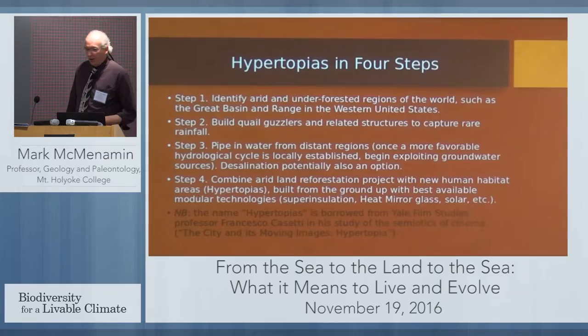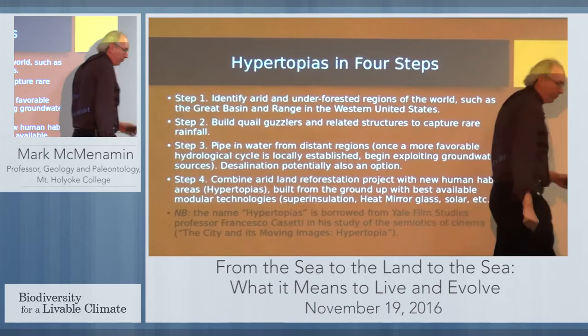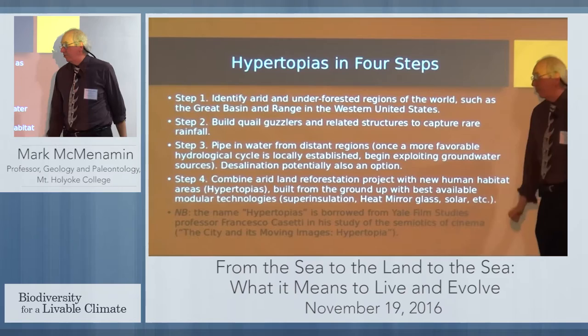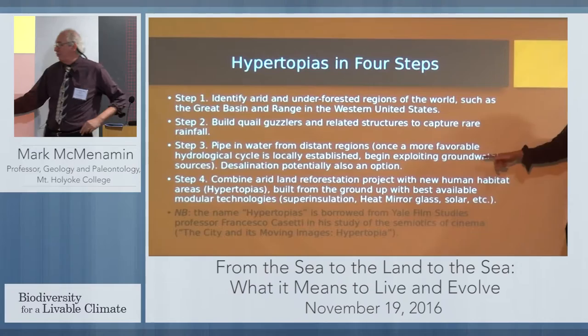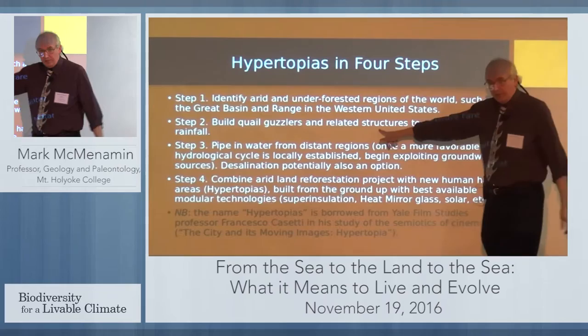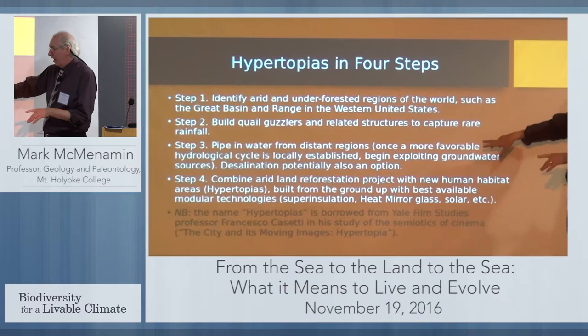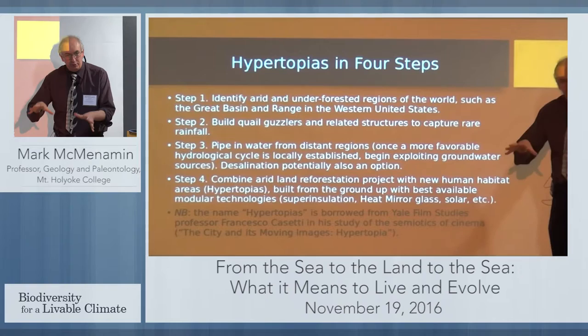Hence the Hypertopia Proposal. Here are the four steps for hypertopias. Step one: identify arid and underforested regions of the world, such as the Great Basin and Range in the western United States, extending into Mexico. Step two: build quail guzzlers and related structures to capture the rare rainfall in the area — I helped build these in the 1970s out in the Mojave Desert, so I know they work. Step three: pipe in water from distant regions. Once a more favorable hydrological cycle is locally established, you can begin to exploit groundwater sources, but not until the hypertopia is already in place.